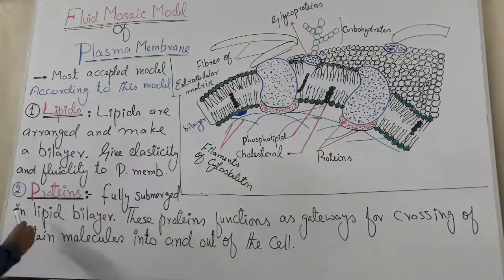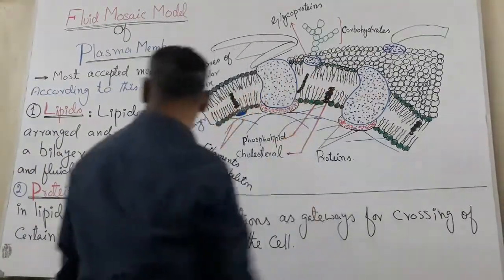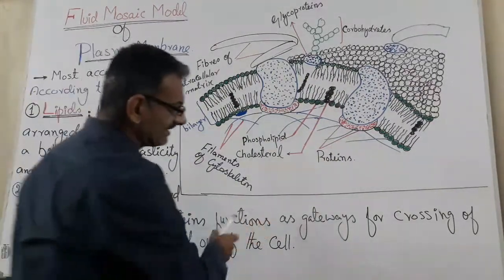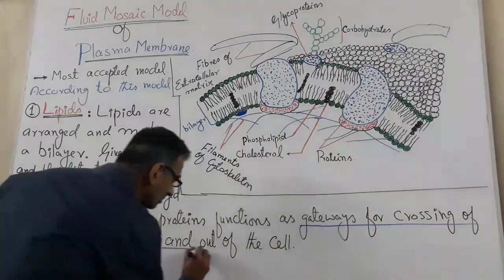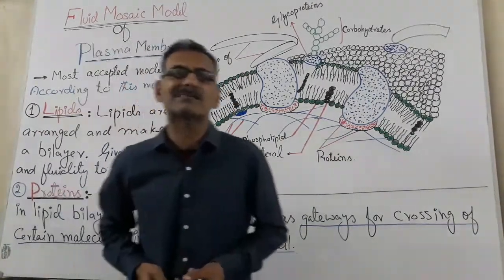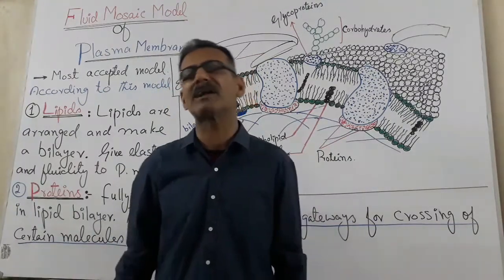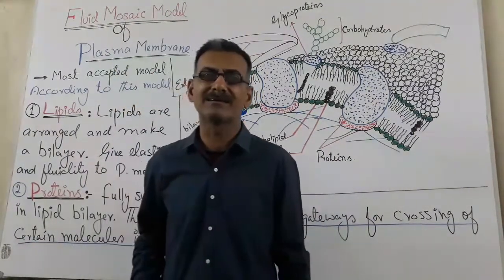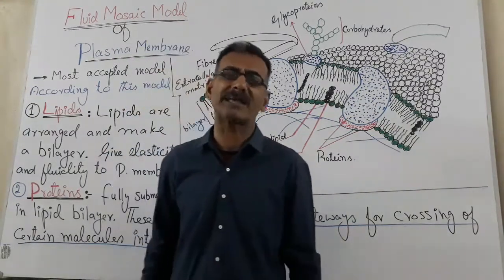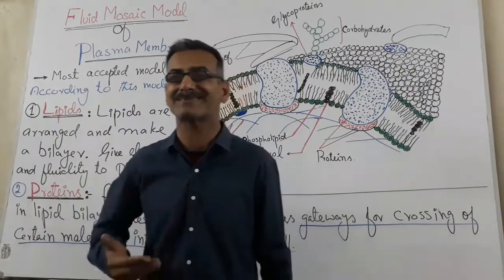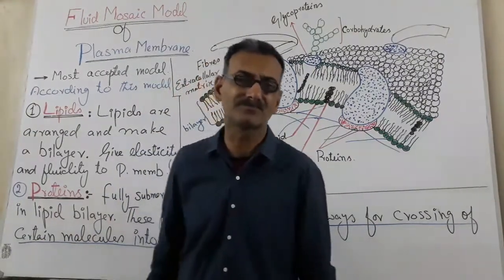These proteins are embedded in the lipid bilayer, as seen in the diagram. These proteins function as gateways for the crossing of certain molecules into and out of the cell, because the plasma membrane is a semi-permeable or differentially permeable membrane. Some molecules can cross this barrier and other molecules cannot, and so this plasma membrane is also known as a selectively permeable membrane — it selects some molecules to pass and rejects others.